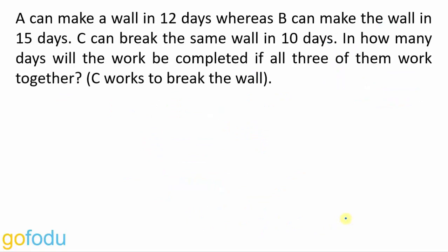This is the question with negative work. A can do the work in 12 days. We have 12, 15, and 10. So total work is 60. Rate of A is 60 upon 12, that is 5. Rate of B is 60 upon 15, that is 4. Rate of C is 60 upon 10, that is 6.